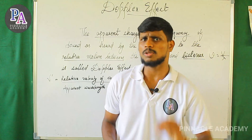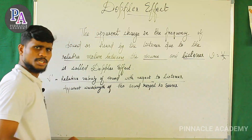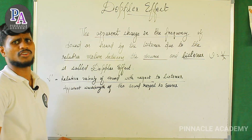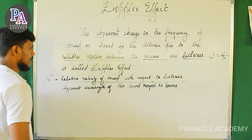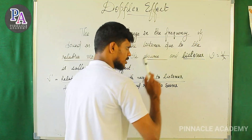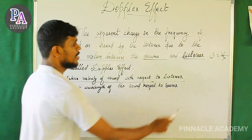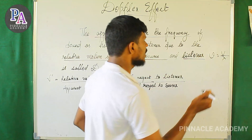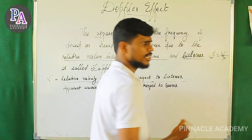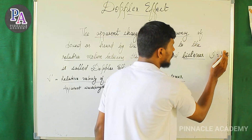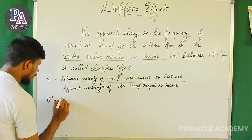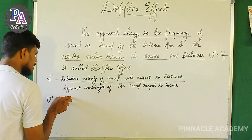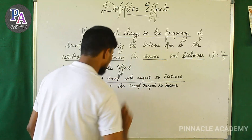The derivation gives us the apparent frequency. The apparent frequency equals V-dash divided by lambda-dash, where V-dash is the relative velocity of sound with respect to the listener. The base equation is: frequency new equals V by lambda.